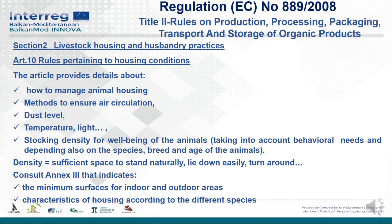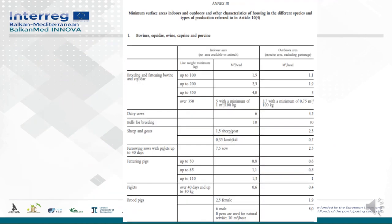Taking into account behavioral needs and depending on species, breed and age: density must allow sufficient space to stand naturally, lie down easily, and turn around freely. For detailed indications, consult Annex 3, which indicates the minimum surfaces for indoor and outdoor areas and housing characteristics according to different species. Here I am presenting Annex 3: Minimum surface areas indoors and outdoors and other characteristics of housing for the different species and types of production referred to in Article 10.